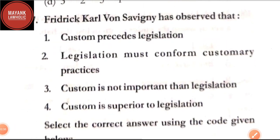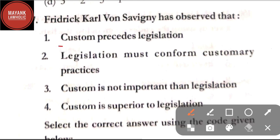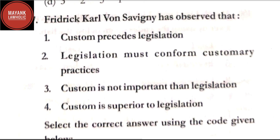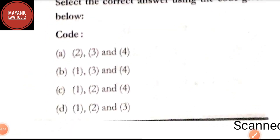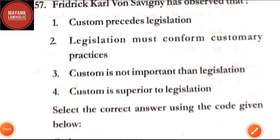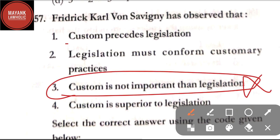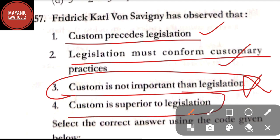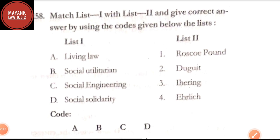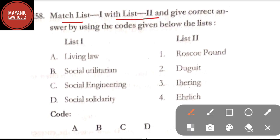Question number 157: Frederick Carl Von Savigny has observed that — first, custom precedes legislation; second, legislation must confirm customary practices; third, custom is not important in legislation; fourth, custom is superior to legislation. The correct answer is option C — statements one, two, and four are correct. The third statement — 'custom is not important in legislation' — is not correct.